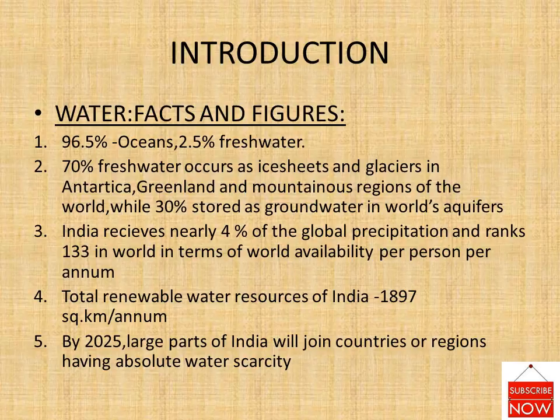96 percent of the total volume of the world's water is estimated to exist as oceans, and only 2.5 percent as fresh water. Nearly 70 percent of this fresh water occurs as ice sheets and glaciers in Antarctica, Greenland, and mountainous regions of the world, while a little less than 30 percent is stored as groundwater in the world's aquifers. India receives nearly 4 percent of the global precipitation and ranks 133rd in the world in terms of water availability per person per annum. The total renewable water resources of India are estimated at 1,897 cubic kilometers per annum. By 2025, large parts of India will join countries or regions having absolute water scarcity.